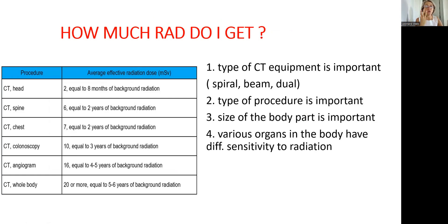There are four reasons for that. Number one, it depends on the equipment — there are CT spiral, beam, and dual. Number two, the type of procedure is important. Here on the left, you can see different types of procedures. For example, CT of the head gets only 2 mSv of radiation. However, a whole body CT will get 20 or more.